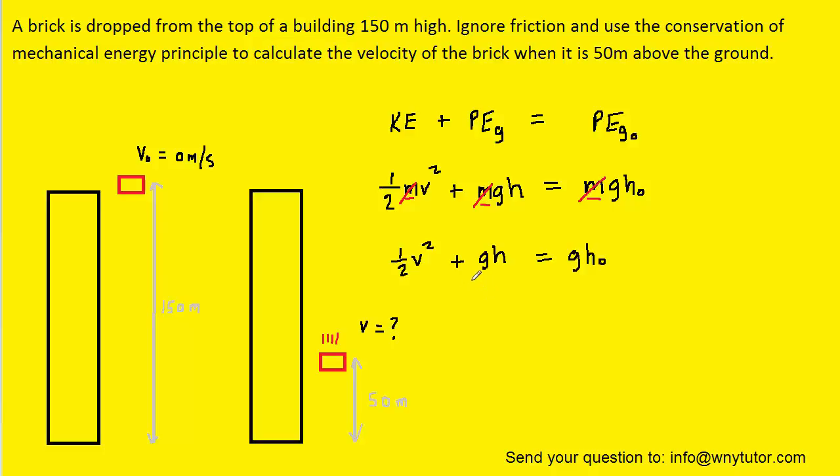Next, why don't we go ahead and subtract gh from both sides of the equation. We can then multiply both sides of the equation by 2 so that way we can cancel out the 1 half.